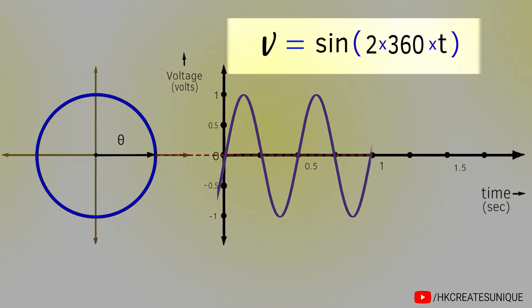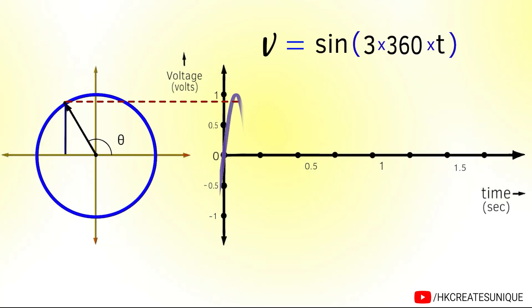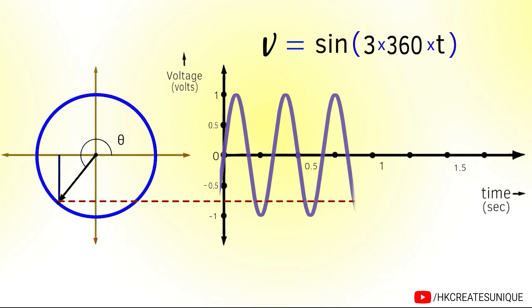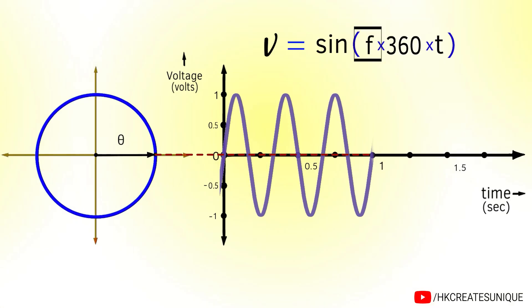And if you multiply by 3 in this, three cycles will be completed in one second. You may have already guessed what this number is. This is called frequency, denoted by f.